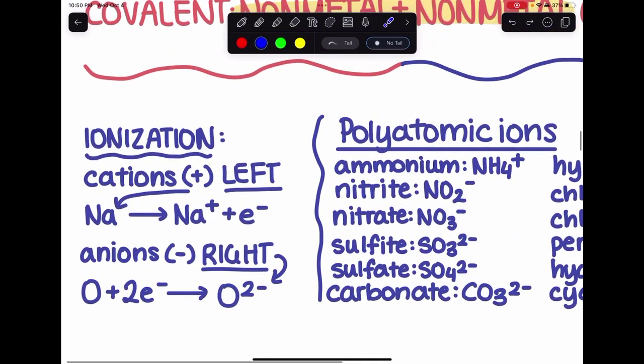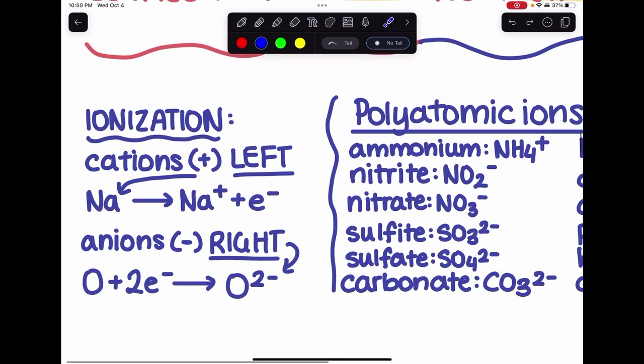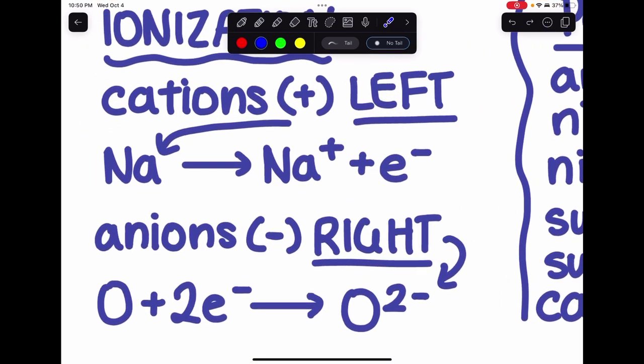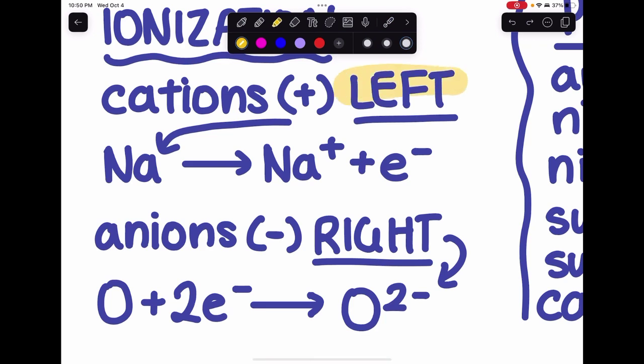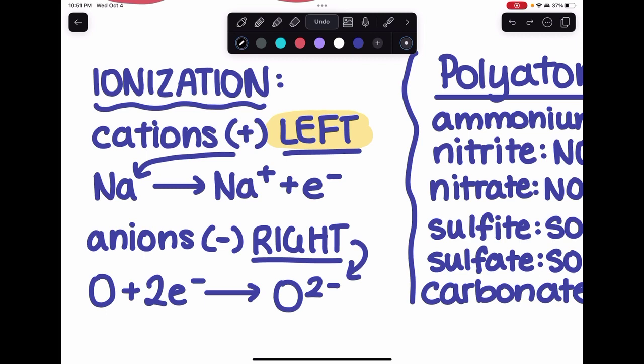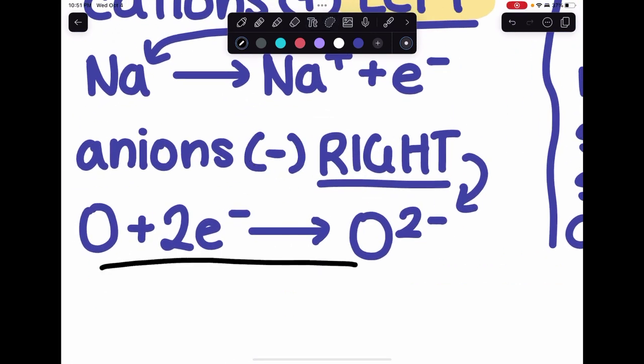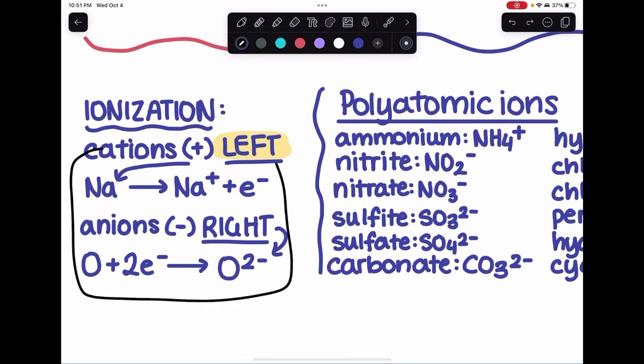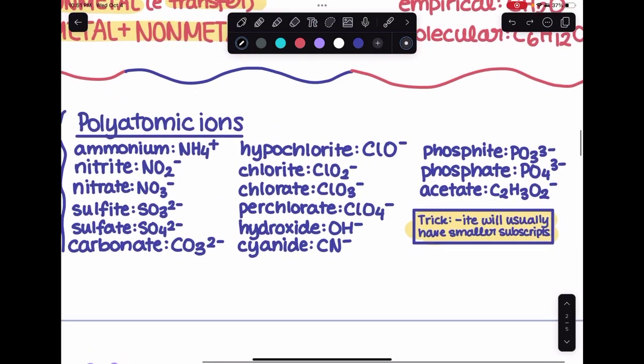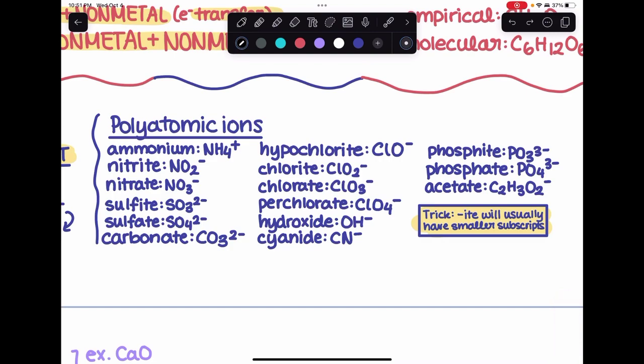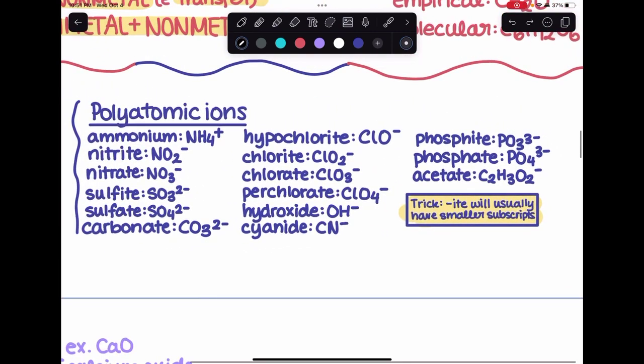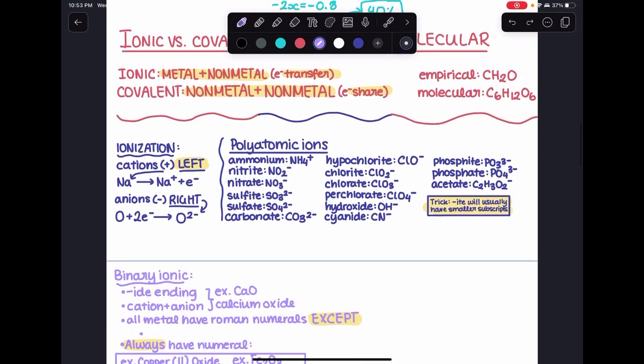Now let's switch into these charges and everything. There's ionization equations here. Just remember something that you need to remember: cations, the element is going to be on the left side. Anions, their element is going to be on the right. So just remember the order that these are supposed to go in. And here's a list of some polyatomic ions. I'm not going to cover them all because there's a lot, but here's a little trick. The ones ending in -ite will usually have smaller subscripts than their -ate counterparts.